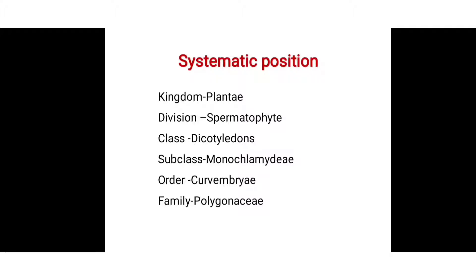Class Dicotyledons: two cotyledons are present, so it is called Dicotyledons. The root is a taproot system. The venation is reticulate, meaning the veins are arranged in a net-like structure in the leaf. Generally, flowers are 5 or 4 in number — pentamerous or tetramerous. After fertilization, the ovary converts into fruit, with flat fruits formed.